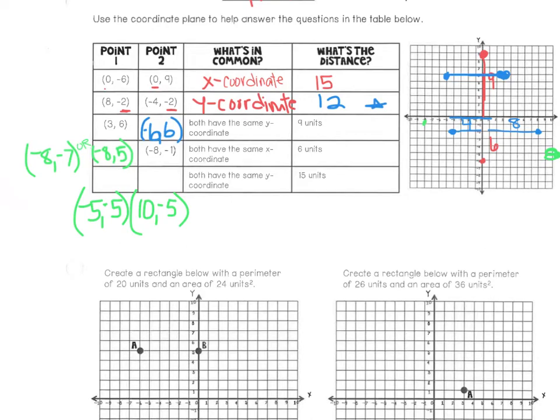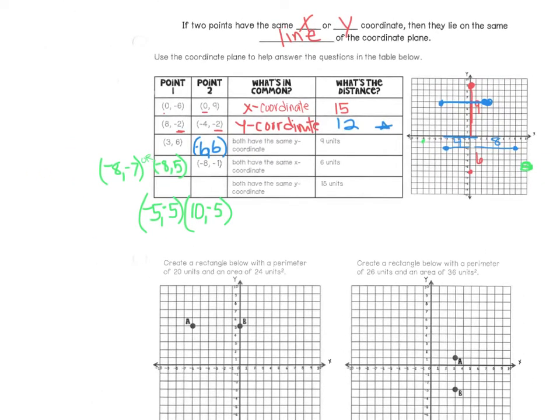Hopefully you got some answers in for these. In the second to last row, there were two possible answers: you could have negative eight, negative seven as point one, or you could use negative eight and positive five, depending on if you go six units above or six units below point two — either is fine. For the last one, there are many different answers you could have; you just had to have the same y-coordinate, and your x-coordinates should be 15 units apart. I did negative five and positive ten, but there are lots of different possibilities.